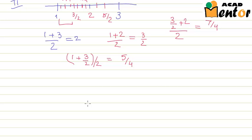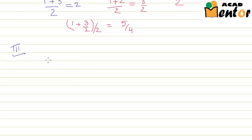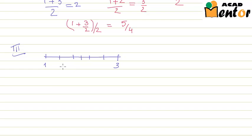The third way is by again drawing the number line between 1 and 3. This way is also given in your NCERT textbooks. Suppose you have to find 5 rational numbers between 1 and 3 — you mark 5 equidistant points on the number line, which basically divides it into 6 equal parts. So the distance between 3 and 1, which is 2, is divided among 6 equal parts.